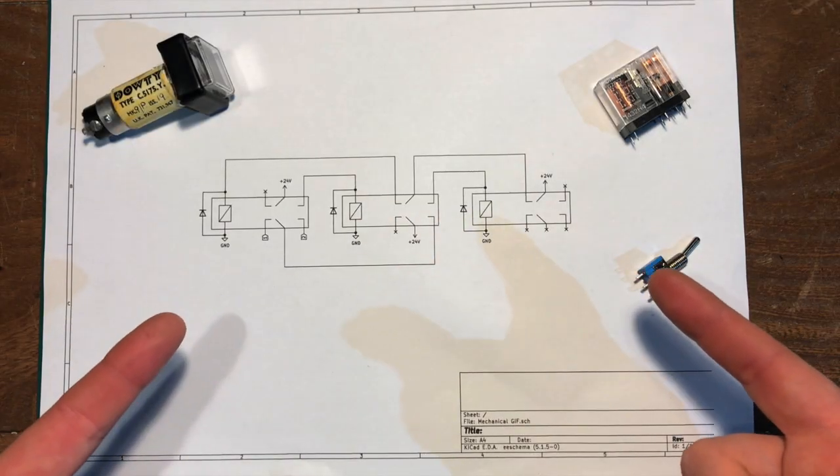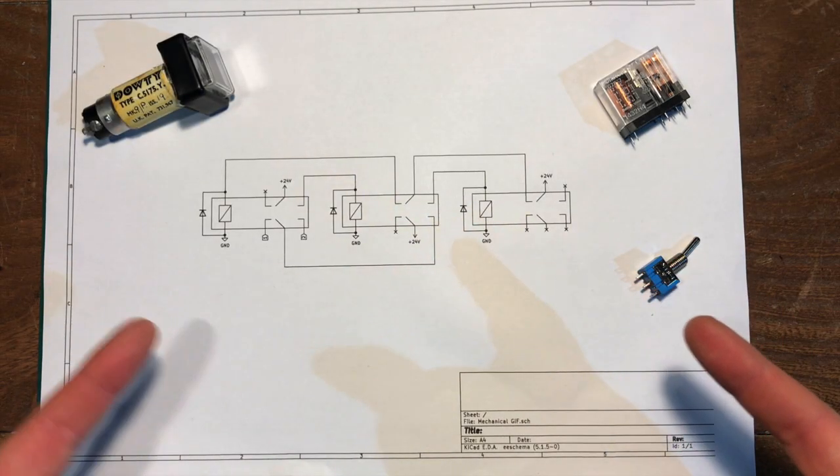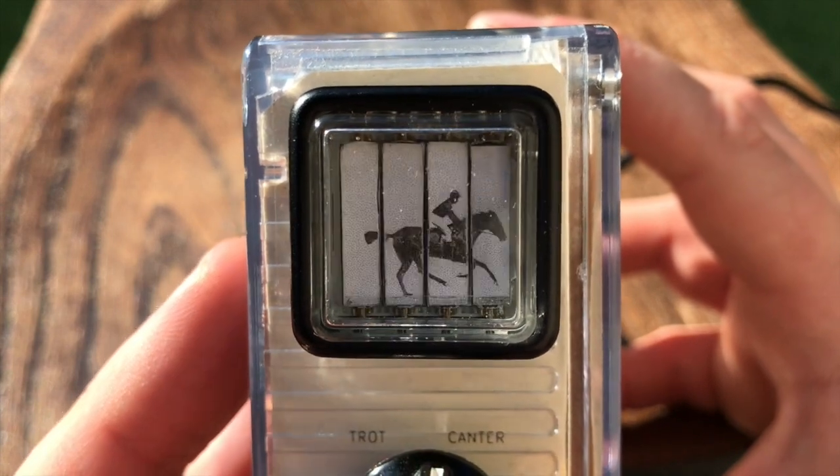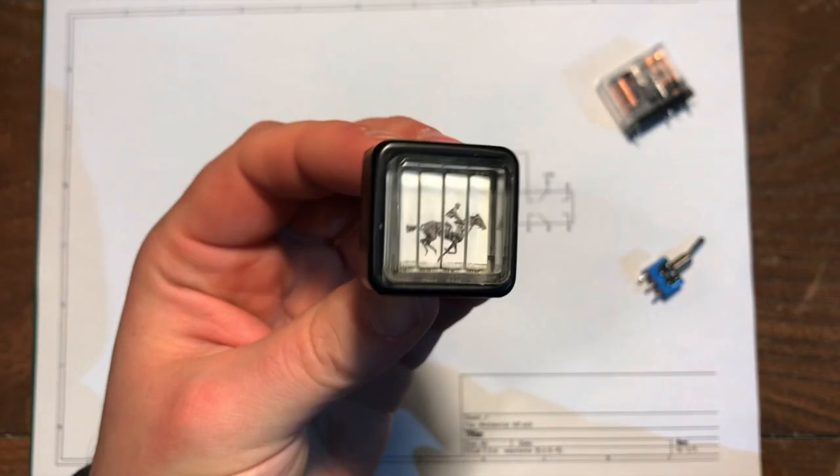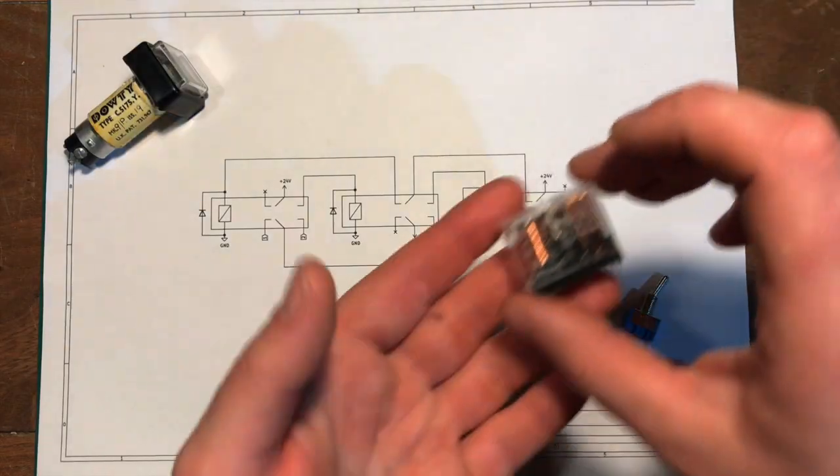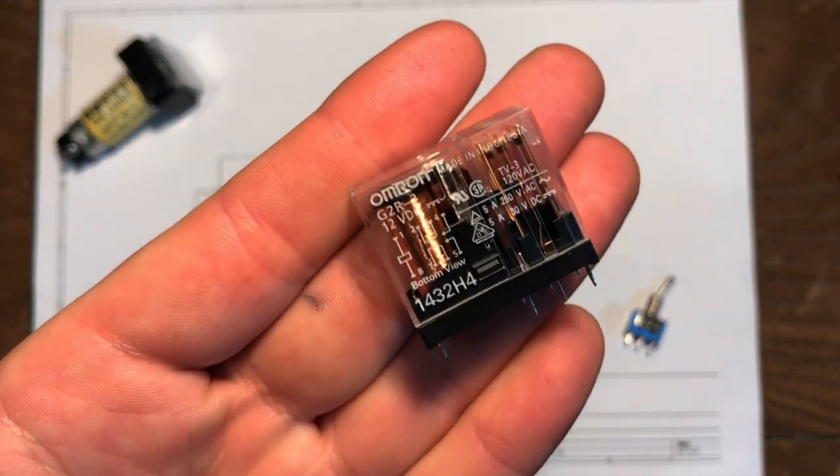So this is the circuit that handles the switching on the mechanical gif that I've been making out of these aircraft indicator switches. It's based on three of these relays here.